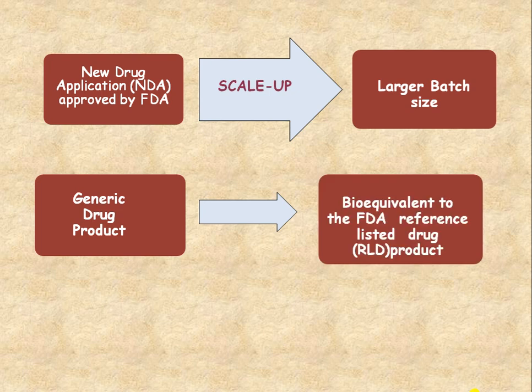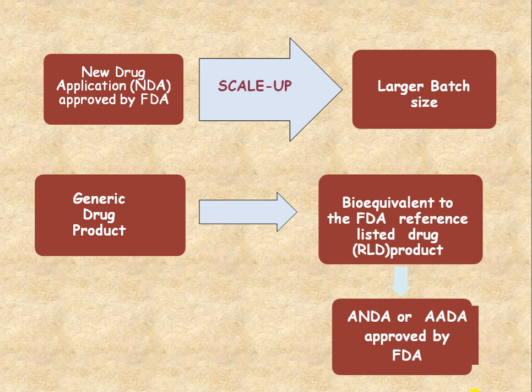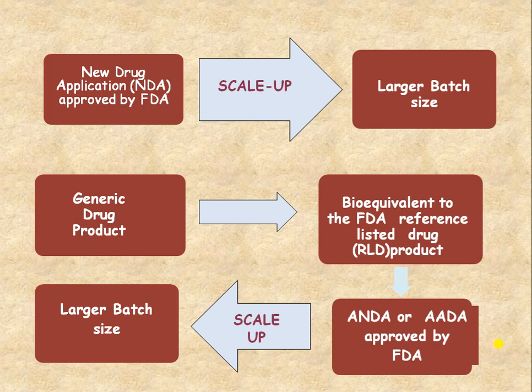When you apply for the generic drug product or the ANDA application, when the patent is expired, after expiration of the patent you can manufacture that particular dosage form. For this purpose you have to show bioequivalence studies — you have to prove the bioequivalence studies of the patented formulation and your formulation to the FDA. Only then is the ANDA application approved by the FDA, and again you have to proceed for the scale-up and large batch size.